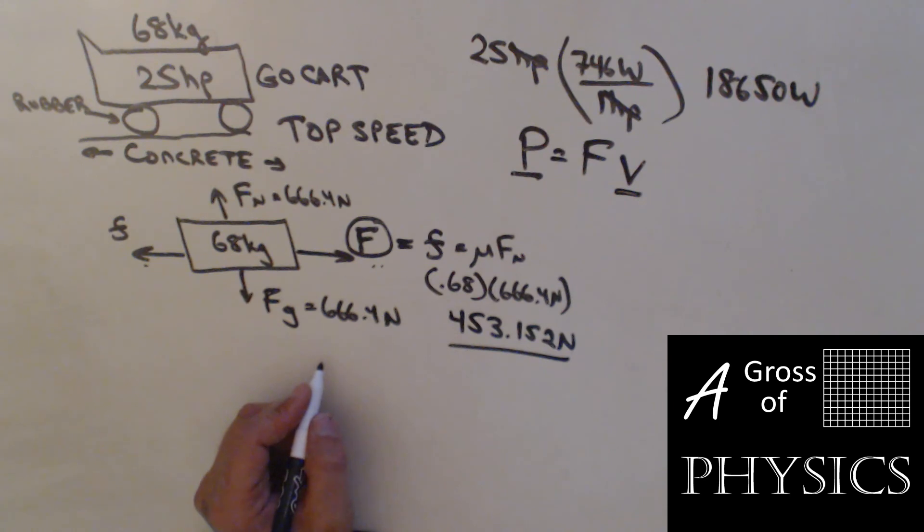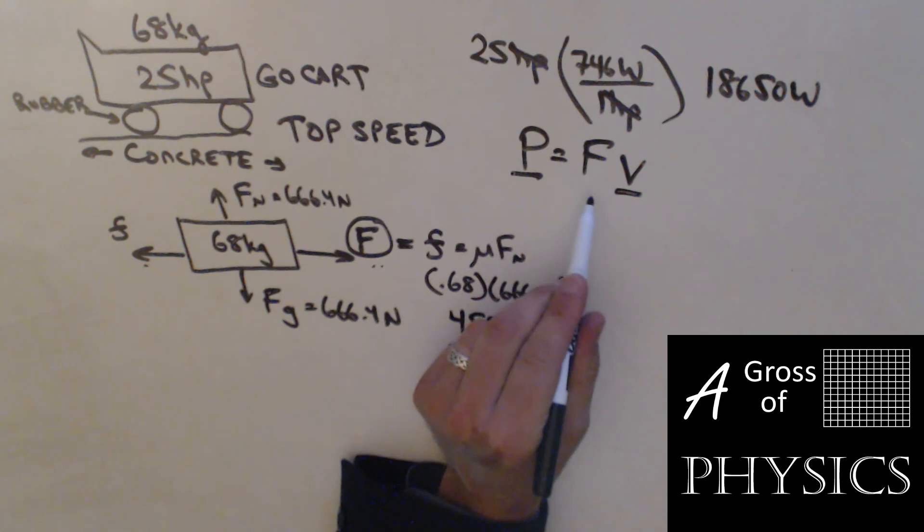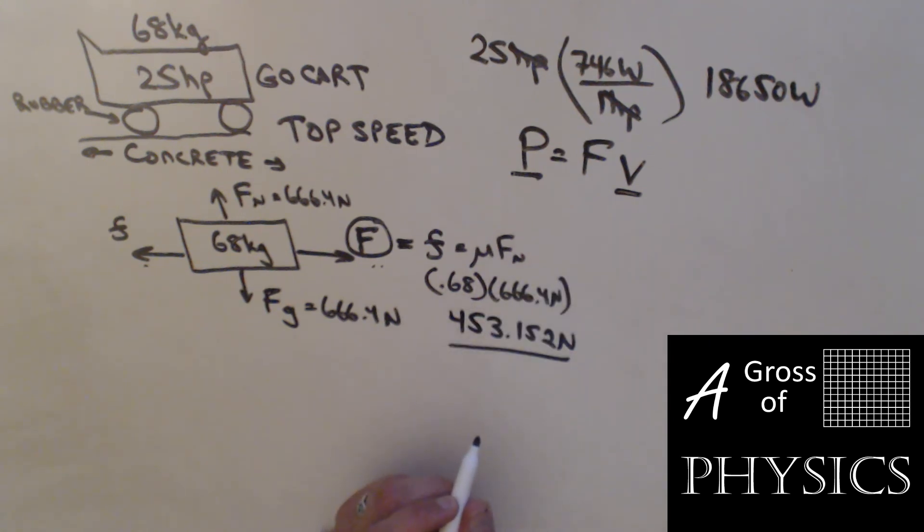The power is 18,650. The force I need to apply is 453.152 to keep it moving, and the V will be my answer. So 18,650 watts equals 453.152 newtons times V. V becomes 18,650 divided by 453.152.